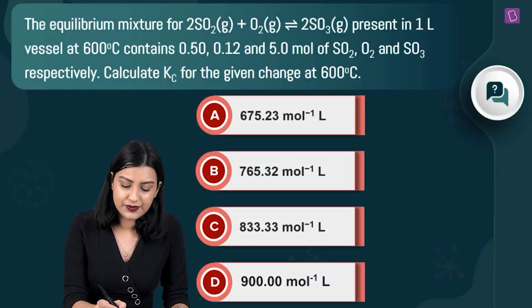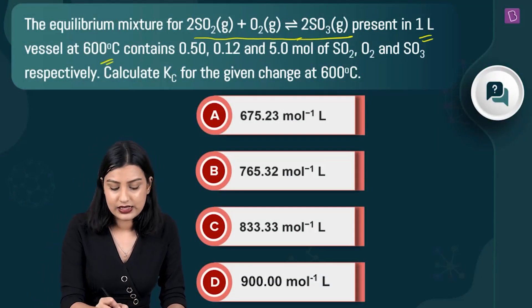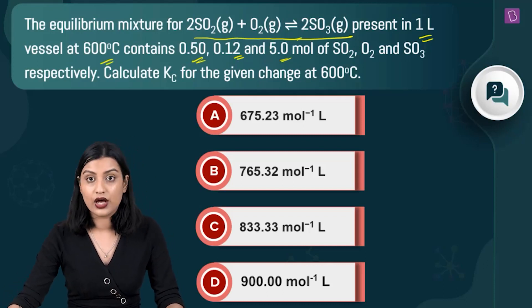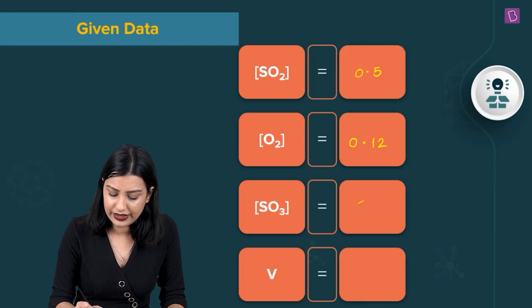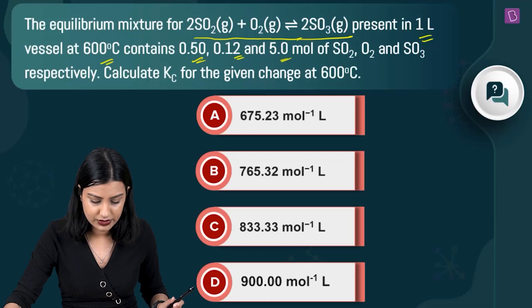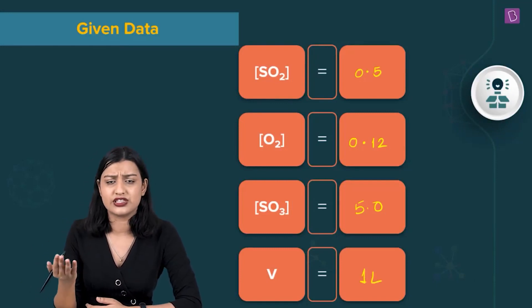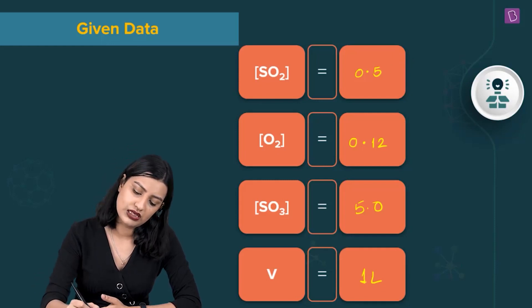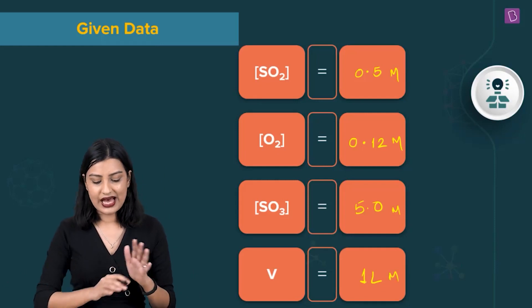Here they've given the equilibrium: 2SO₂ + O₂ ⇌ 2SO₃, all gases, in a one-liter vessel at 600 degrees Celsius, containing 0.5, 0.12, and 5 moles of SO₂, O₂, and SO₃ respectively. We need to calculate Kc. Since volume is 1 liter, concentration in mol/L equals the number of moles directly. We need to write the expression for Kc using these equilibrium concentrations.